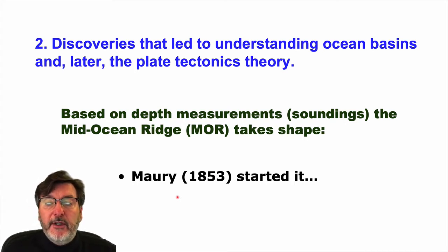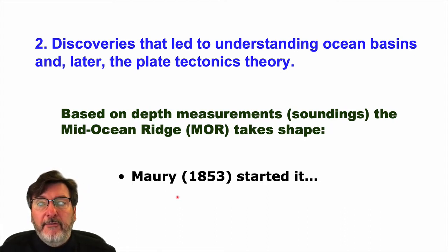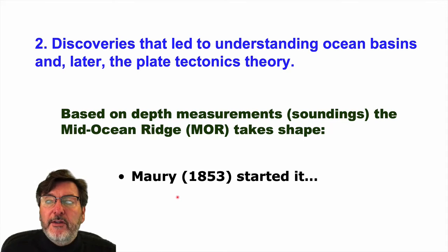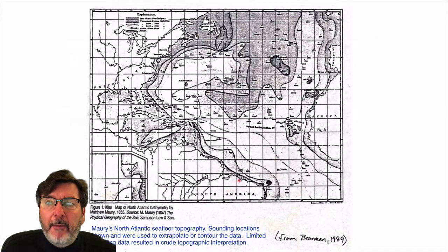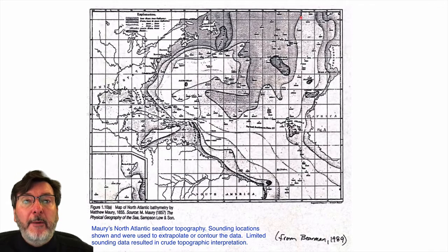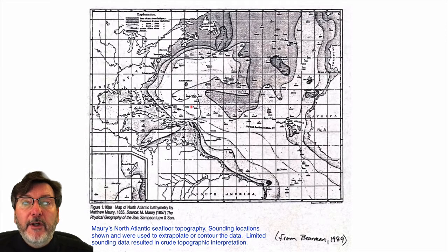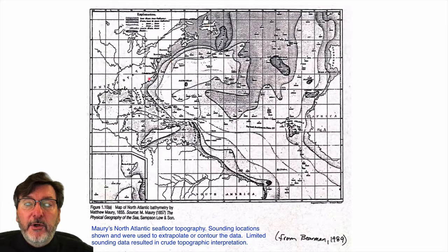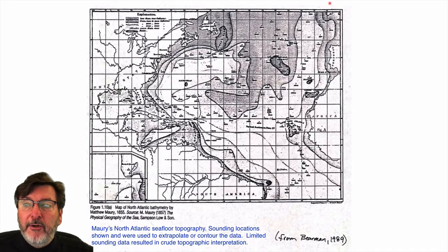In 1853, he started it all off by publishing a book, and one of the figures was this bathymetric map — a topography of the seafloor in the North Atlantic. Here's Nova Scotia, Newfoundland, the east coast of the U.S., a ragged-looking Florida, and the Gulf of Mexico. Over here is Portugal and Spain, the Iberian Peninsula, and West Africa with the Sahara Desert. In the deep Atlantic, all these little numbers with spots are sounding measurements — depths.